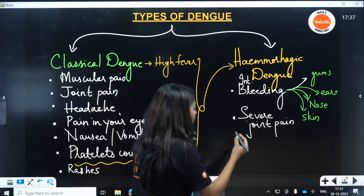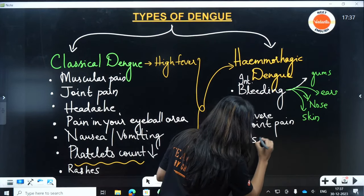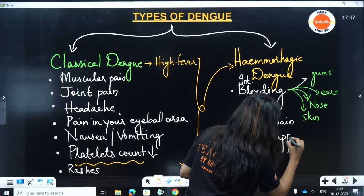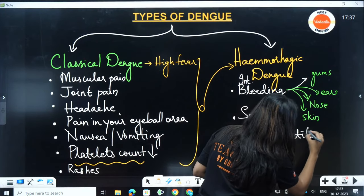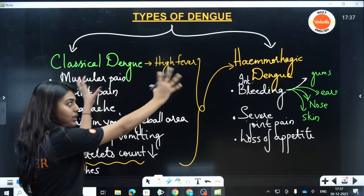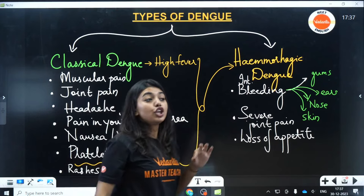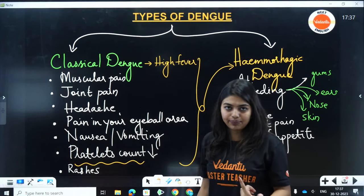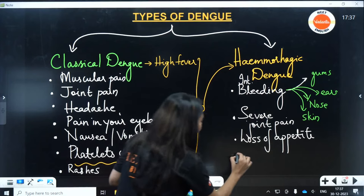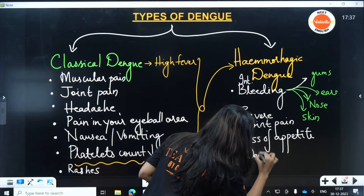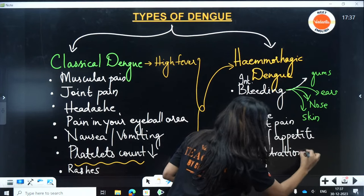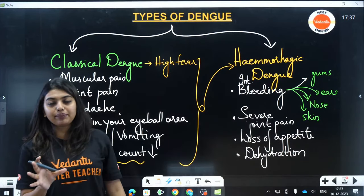Loss of appetite is also a symptom — you will not feel like eating. And a very common symptom of both types of Dengue is dehydration — you will feel very, very thirsty. No matter how much water you take, you will still feel thirsty.